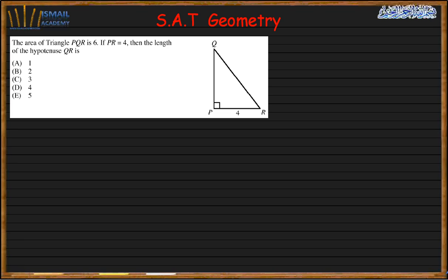Welcome to ACT practice. Today we're going to do another set of geometry questions. Let's start with the first question: the area of triangle PQR is 6.